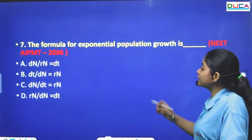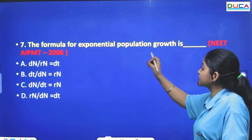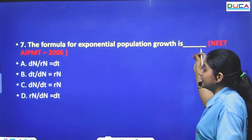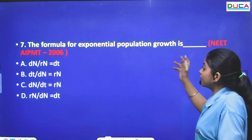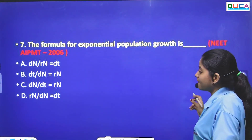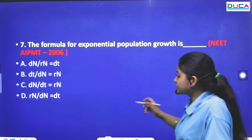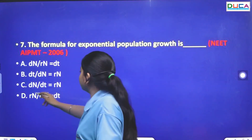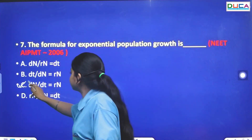The next question: What is the formula for exponential population growth? That is dN/dt = rN.